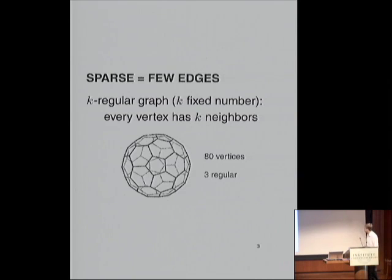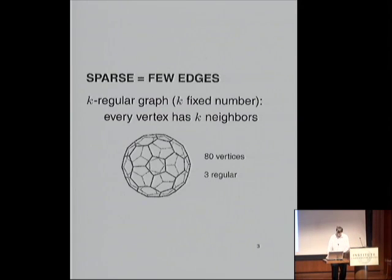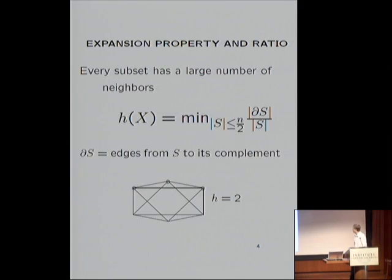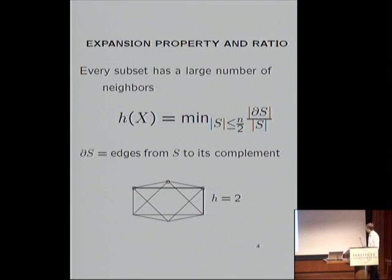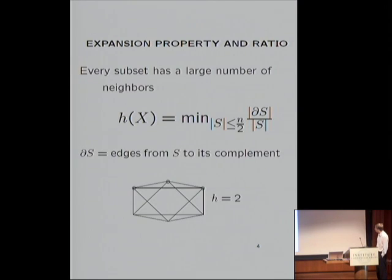We have two notions here. First, a sparse graph means that you have few edges. In particular, you can take a K-regular graph where K is fixed and the number of vertices becomes very large. As for high connectivity, a way to express that is in terms of the expansion ratio. We take arbitrary subsets of the set of vertices — a graph on N vertices, of size bounded by N over 2 — and look at the ratio between the boundary of the set, which is the number of edges going from S to its complement, over the size of the given set. Expansion means this ratio stays bounded away from zero.